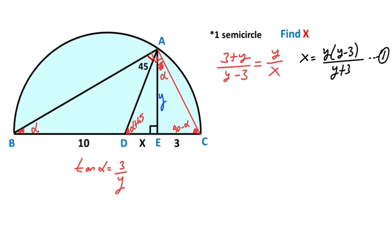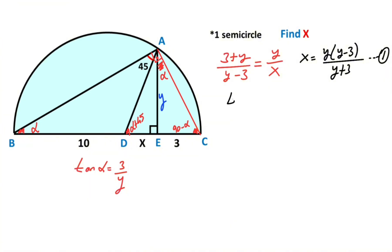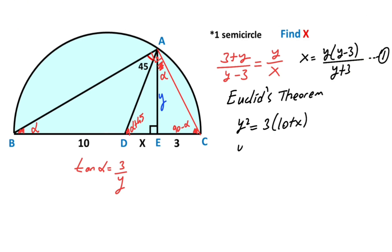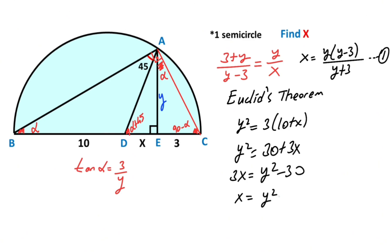After that, if you focus on triangle BAC and apply the geometric mean theorem: y squared equals 3 times (10 plus x). So y squared equals 30 plus 3x. That means 3x equals y squared minus 30, so x equals (y squared minus 30) over 3. This is the second equation.